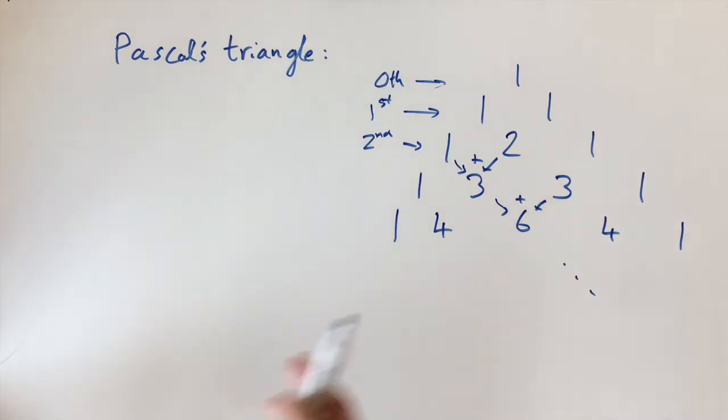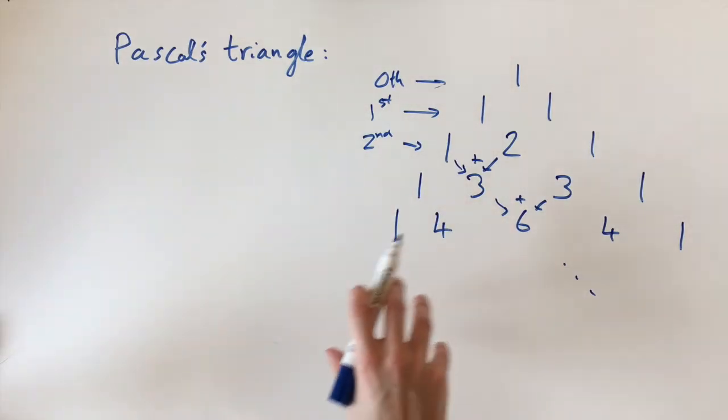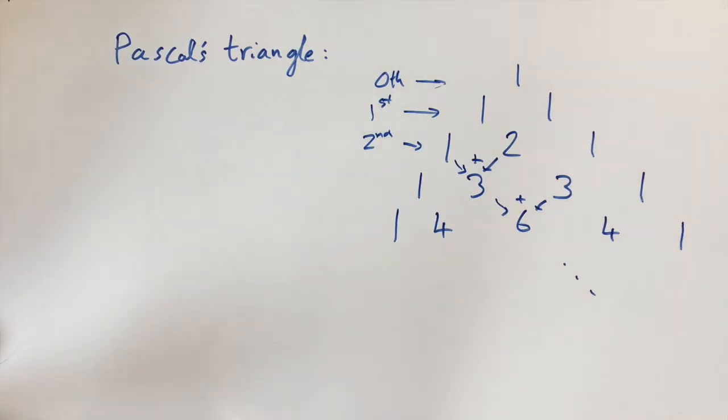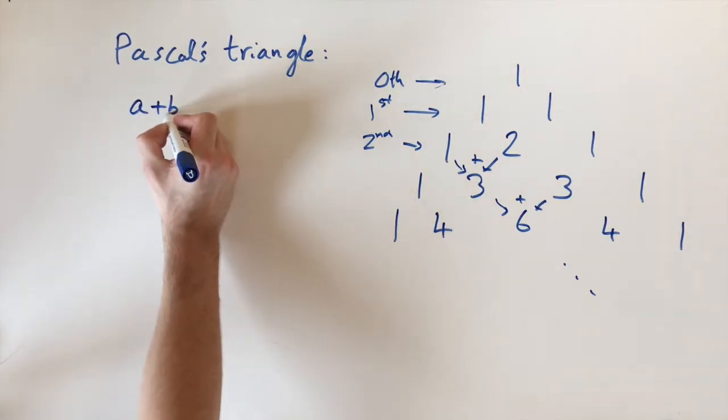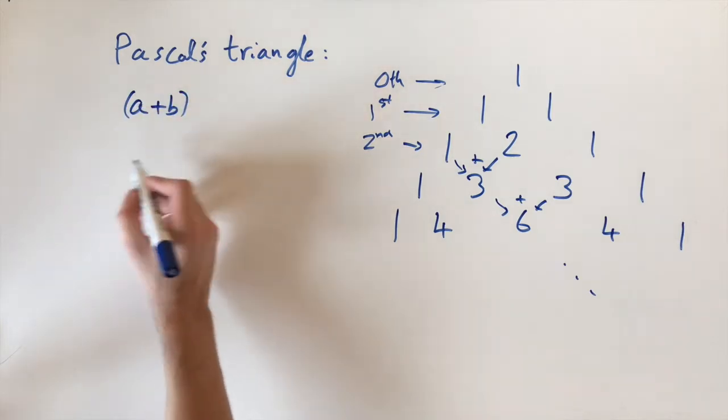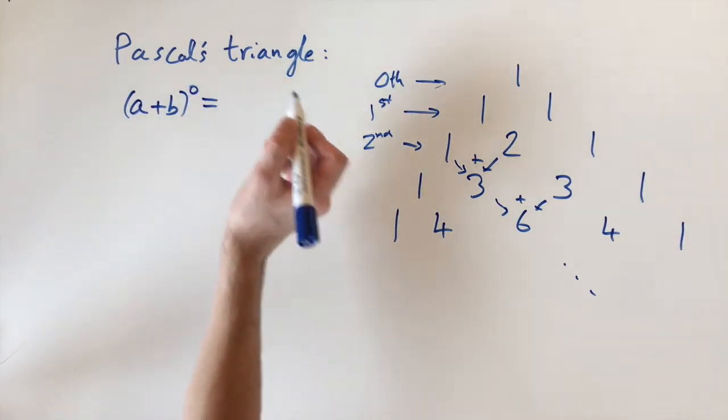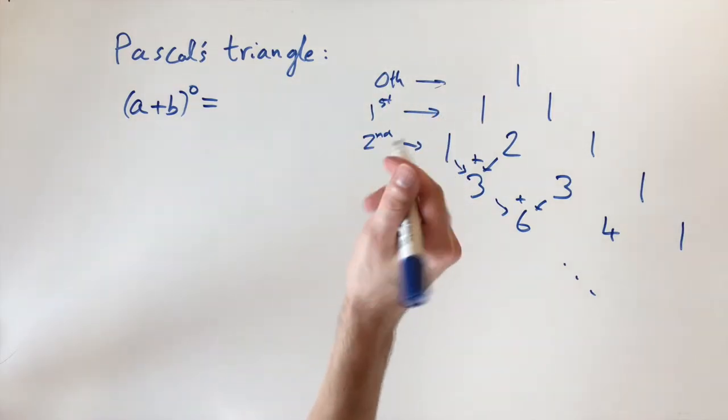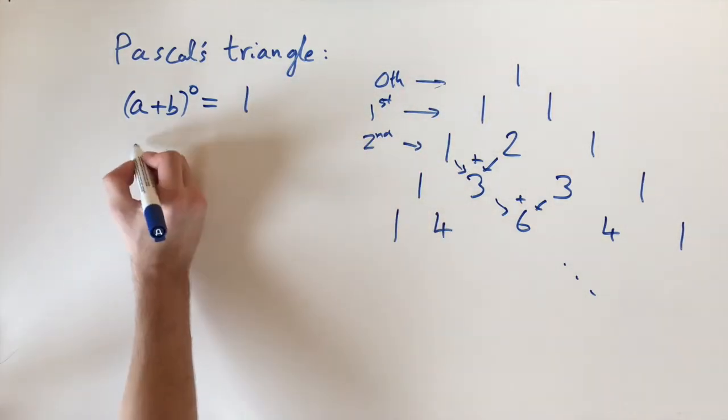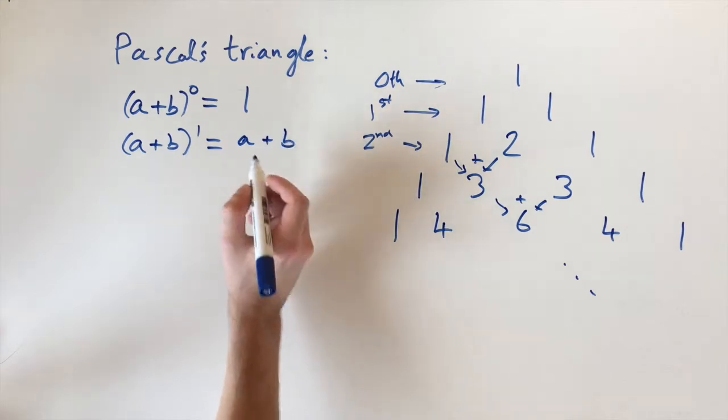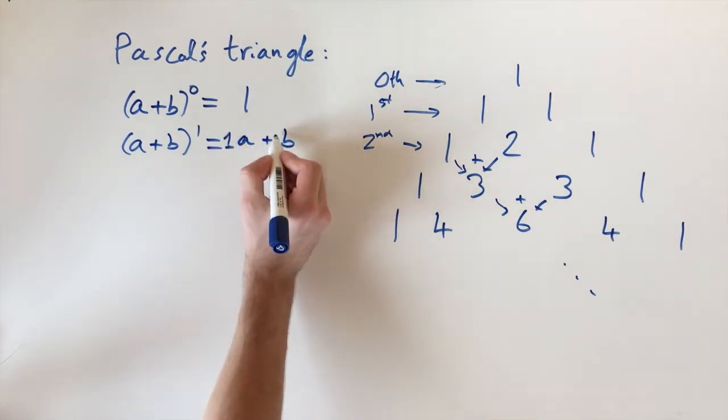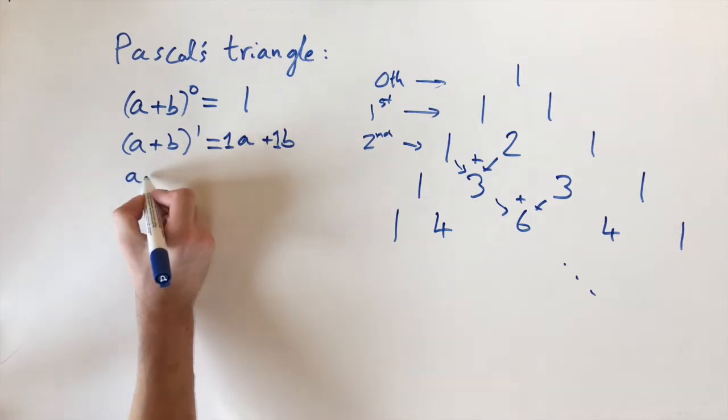This is motivated by binomial expansion. When you want to expand those brackets out, this can help us find the coefficients. Let's start off very simply. If we have (a+b) and we want to raise this to a power, let's start with zero. By definition, anything to the power of zero is just equal to 1. Let's carry on: (a+b) to the power of 1, well anything to power of 1 is just itself, so we have a+b, or you can think of this as 1 times a plus 1 times b.